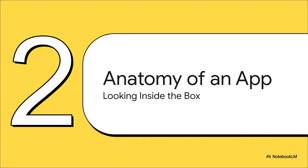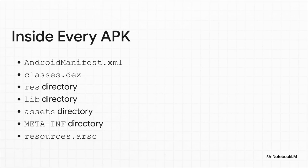So we established it's a package, a digital box — but what's actually inside that box? Let's peel back the layers and take a look at the anatomy of a typical APK. This is where you see the real blueprint of an app. When you unpack an APK, you don't find just one file — you find a whole toolkit. There are several key parts, everything from the app's passport to its brain and all its visual pieces.